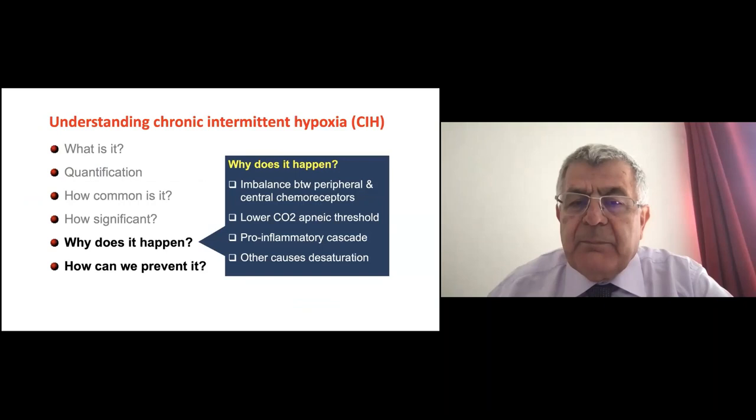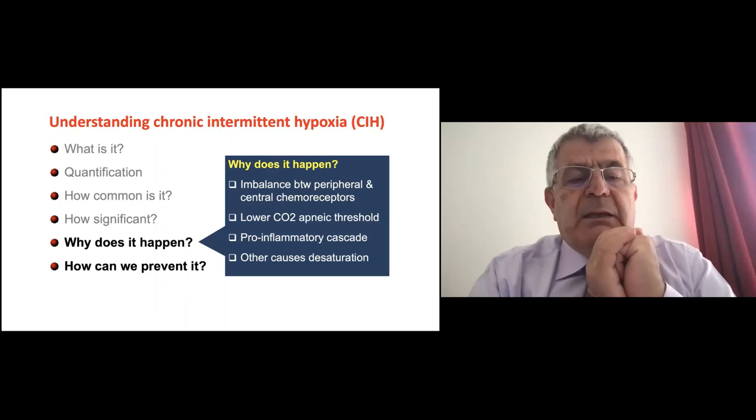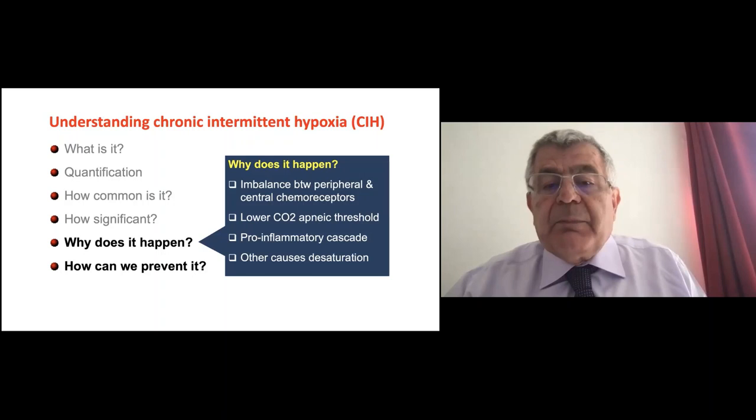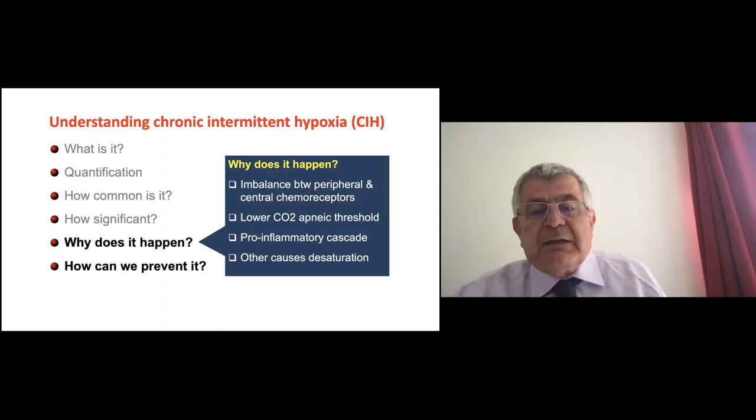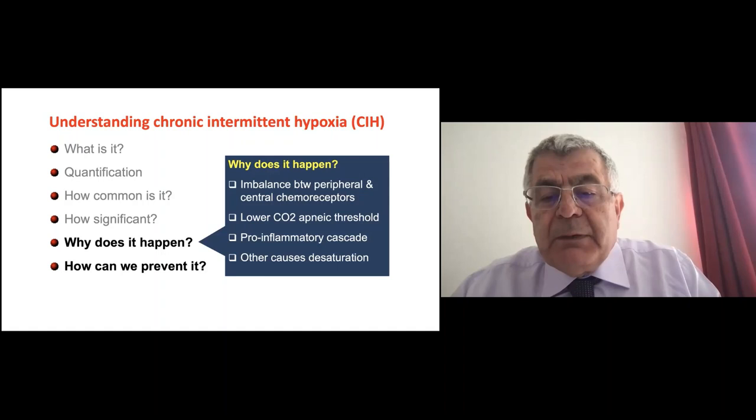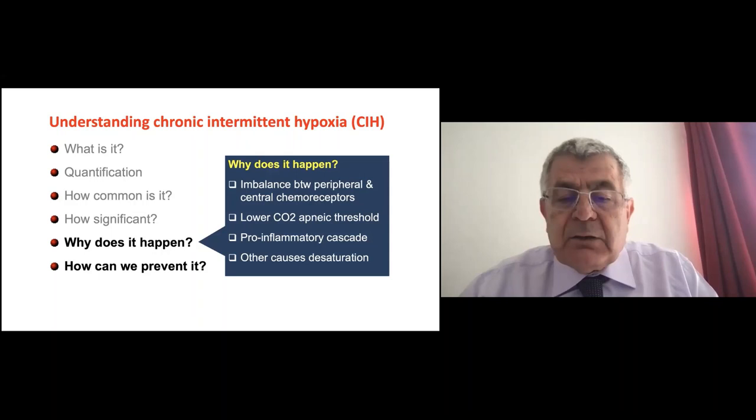Now we move towards why these hypoxic events happen so often. I have four main theories: first, the imbalance between peripheral and central chemoreceptors; second, the low CO2 apneic threshold in preterm babies; third, the pro-inflammatory cascade; and fourth, other causes of desaturation.